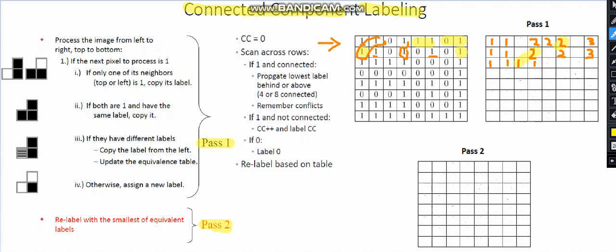Here we have reached a conflict. This one is connected with the above. These are connected. Above is connected, behind also has a label. We assign a new label four for this one. This one is connected, so we say it is four.